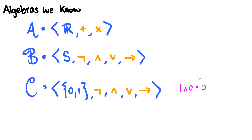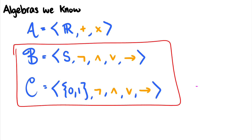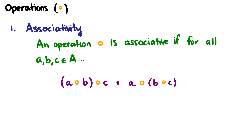You might be thinking: propositional logic and predicate logic are algebras? Yes — this is abstract algebra. It's not just the stuff you do in high school; it's more formal and more abstract. Much like the real numbers with addition and multiplication is an algebra, so is propositional logic and the semantics of propositional logic. Now let's talk about operations. I'll always use the circle as a general operation, and operations can have different properties depending on the operation itself.